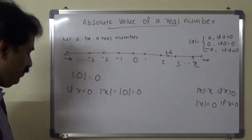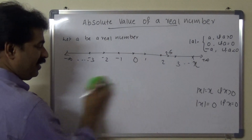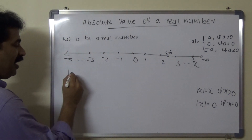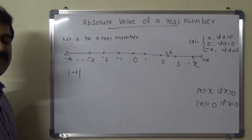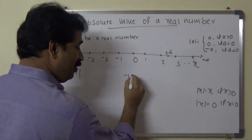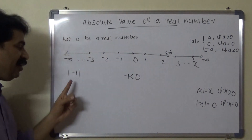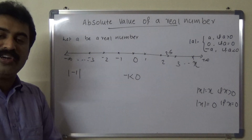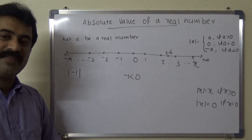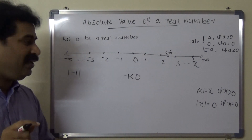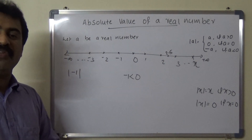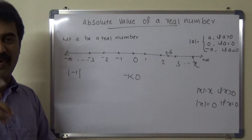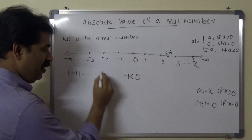Next, we consider negative real numbers. What is the absolute value of minus 1? Here, minus 1 is a negative real number, so the absolute value of minus 1 equals the distance between 0 and minus 1. Since distance cannot be negative, we take the positive value, which is 1.